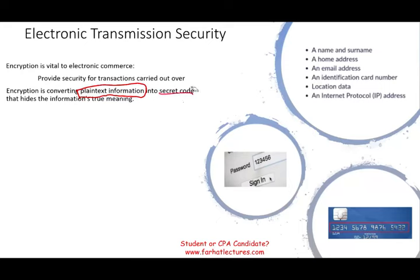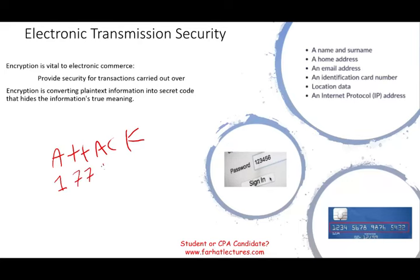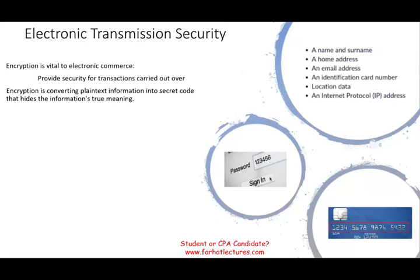This is basically an old way of transmitting messages. Back in the old days, when a king or military commander sent a secret message to another person, they would encode it. For example, if they wanted to signal 'attack,' rather than writing the word, A would be 1, T would be 7, C would be 5, K would be 6. So every time there's an A, replace it with 1; every T becomes 7. These numbers conveyed the secret message — whether to attack, retreat, or something else.